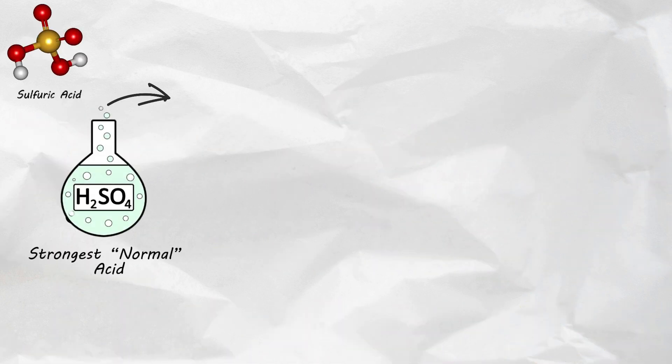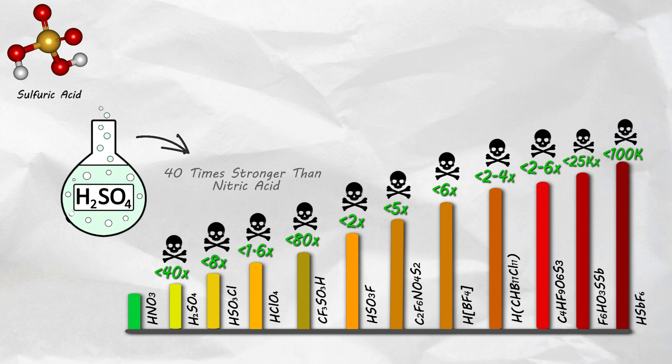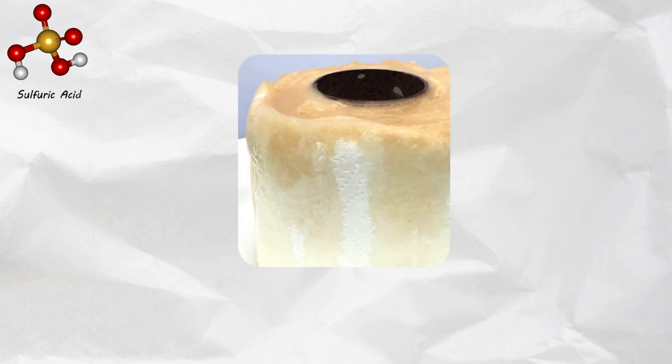Sulfuric acid, this mineral acid is considered to be the strongest normal acid. Everything after this is called a super acid. It is approximately 40 times stronger than nitric acid in terms of acidity, but less harmful if diluted with water.